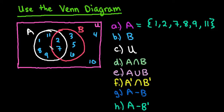For set B we're looking at all of the numbers that are contained inside of the pink circle. So we can see that we have 2, 3, 5, 6, and 7.